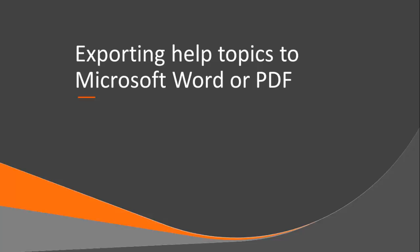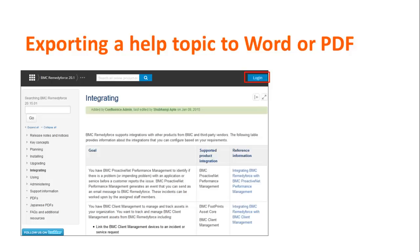If you want to read content in a Microsoft Word or PDF file, you can convert or export topics to either format. If you are not already logged on, use your BMC support credentials to do so. You can export only a single page to Word. However, if you export to PDF, you can export either a single page or an entire branch.